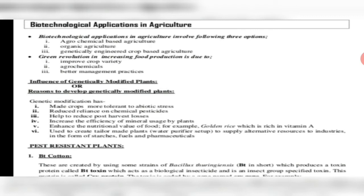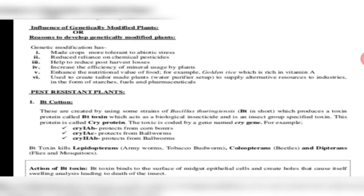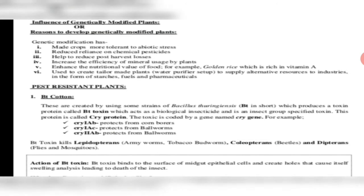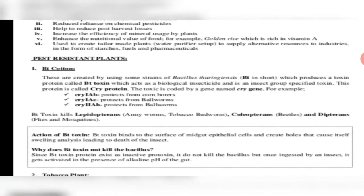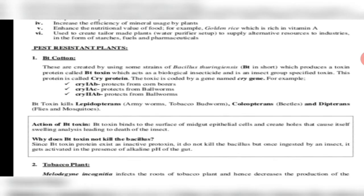Our crops are so hybrid that their input requirements are reduced. The green revolution in India led to improving crop variety, agrochemicals, and better management practices. The influence of genetically modified plants meant crops became more tolerant to various abiotic stresses, reducing dependence on chemical pesticides and fertilizers, minimizing post-harvest losses, increasing efficiency of mineral usage, and enhancing nutritional value. For example, golden rice was created, which is bio-fortified with a high amount of vitamin A.